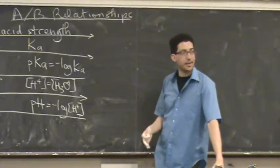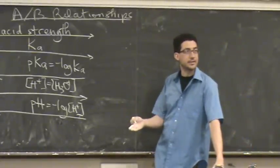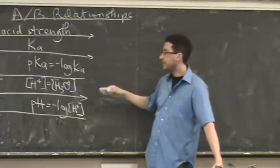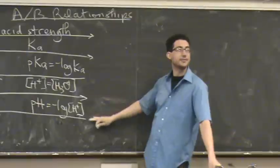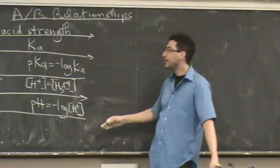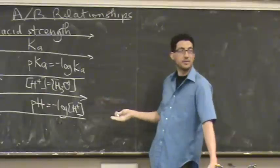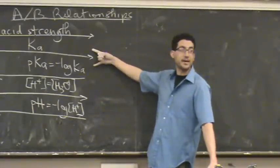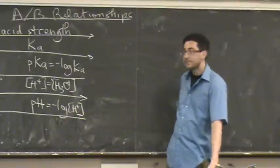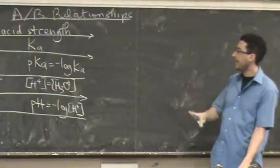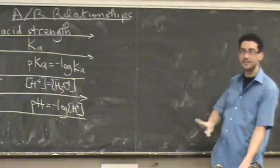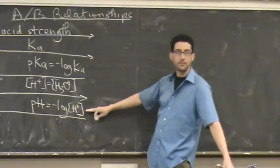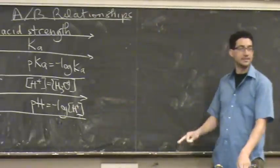So when you see in a table listed acid strengths, they're going to list either the Ka or pKa or both. They will not list the H plus or the pH because those things change based on whatever the concentrations. Okay. So these are the things you'll see tabulated. Good. Good. So again, Ka is a constant. pKa is a constant for any acid. But these concentrations or the pH will change for any acid based on the concentration.